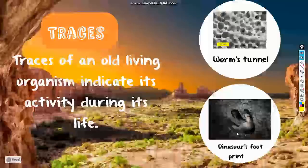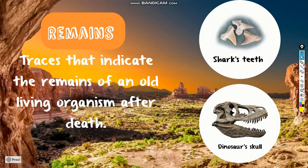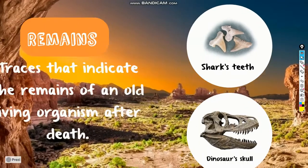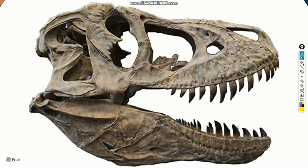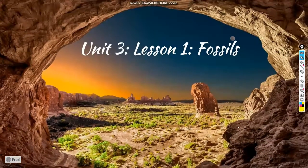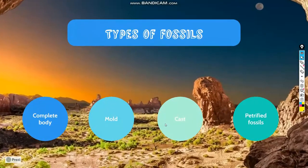Remains are also traces, but they indicate what is left of an old living organism after its death. So after the old living organism dies, it leaves these traces, like the shark teeth or the dinosaur's skull. These are called remains. We also have to learn about the types of fossils. There are four types.